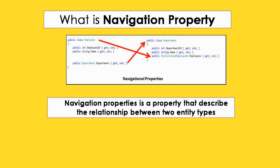When we run our migrations, the relationship between the tables of our database will be created based on these navigation properties. So we will make a slight change in our model classes and run our migrations again. Let's do it.